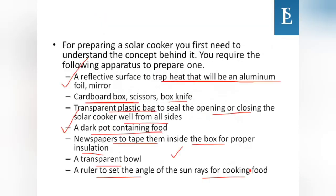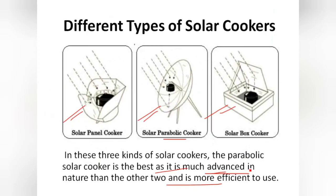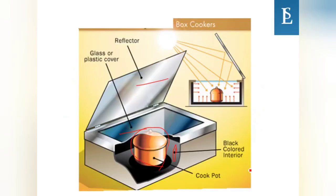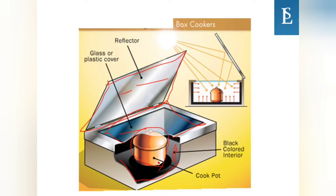In summary, this is how a box cooker is made. The reflectors — aluminum foil or mirror — focus light inward. The glass or plastic cover creates a greenhouse effect. The black colored interior absorbs heat, and the cooking pot sits inside. This is how we can make the solar cooker.